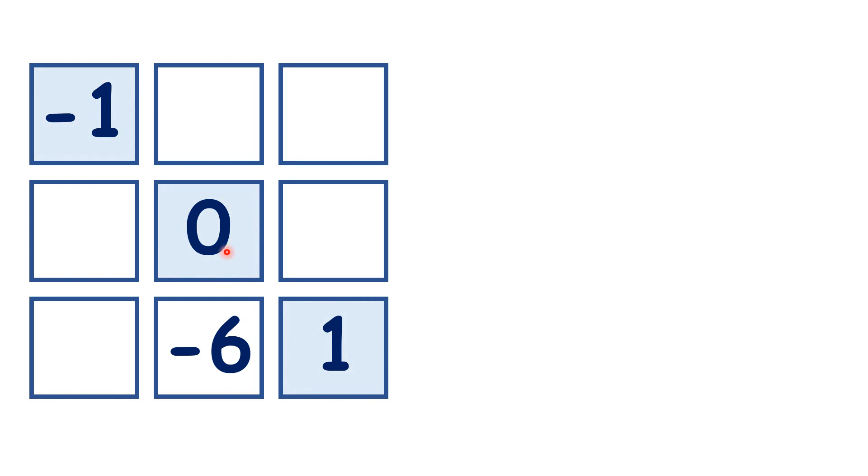We have a complete line in our diagonal, and because minus 1 plus 0 plus 1 is 0, we know that all of our other rows, columns, and diagonals must total 0.